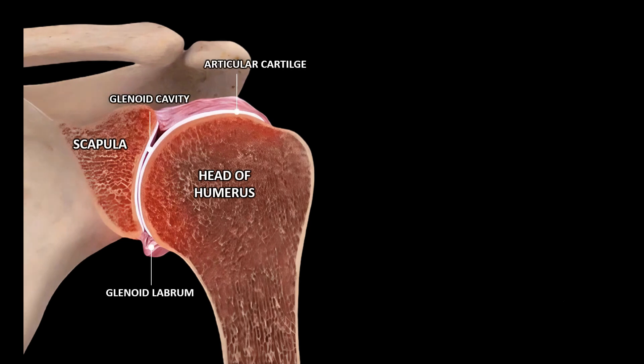However, this high mobility of the shoulder comes at a cost: stability, since the bony surfaces provide little support. This imbalance between great mobility and low stability makes it particularly vulnerable to a large number of injuries.